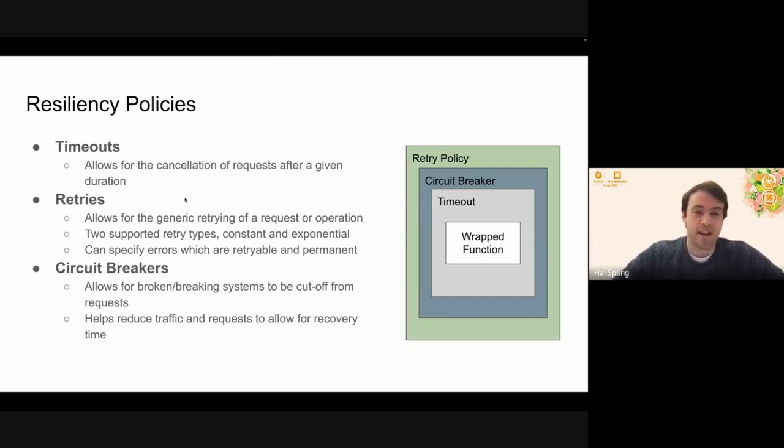Retries, exactly what they sound like, just allows for generic retrying of requests or operations. We support two different types of retries right now. We have constant retries and exponential retries. And then inside of the retry as well, you can even specify, internal to Dapper, you can specify if a retry is, if an error is actually retryable or is a more permanent error.